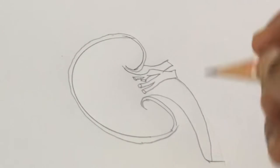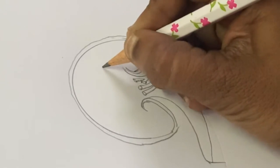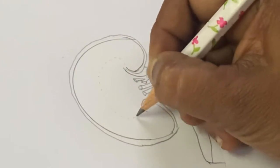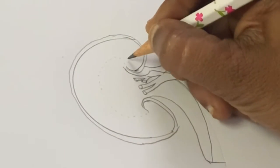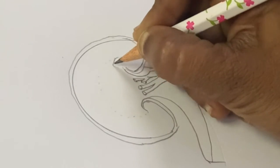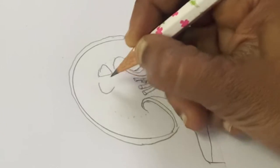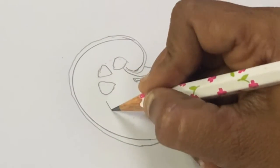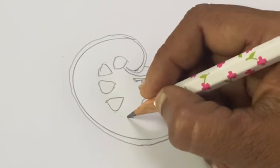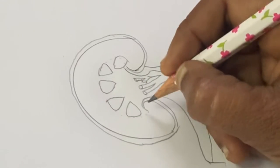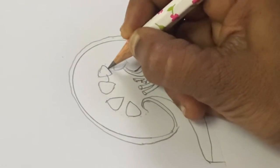Now you draw another semicircle with dotted lines here joining these two curvatures for drawing the medulla. These are the renal pyramids. Then we are joining these renal pyramids.